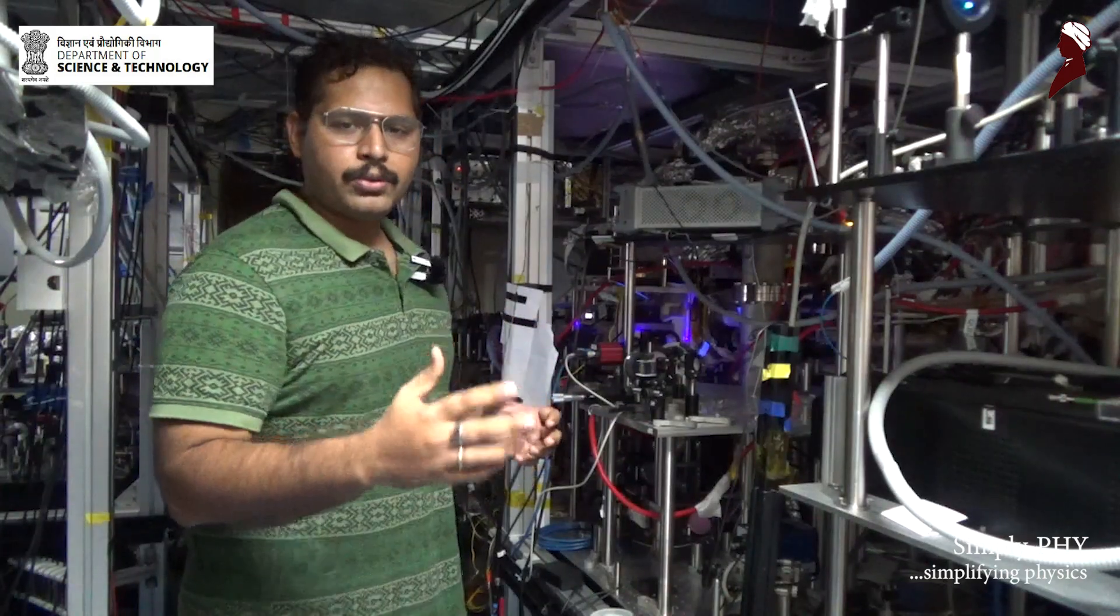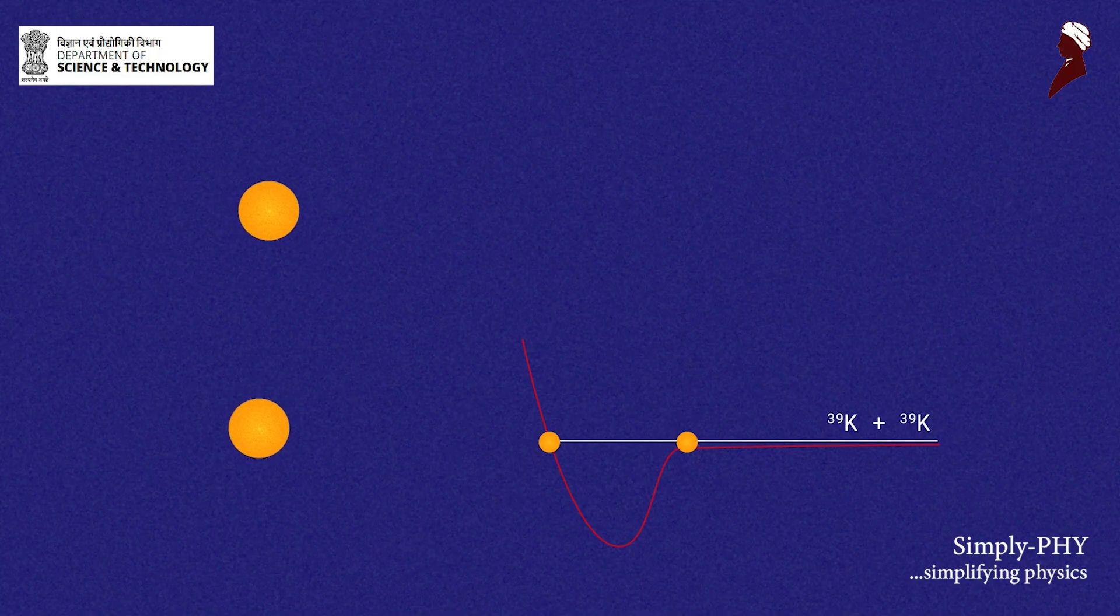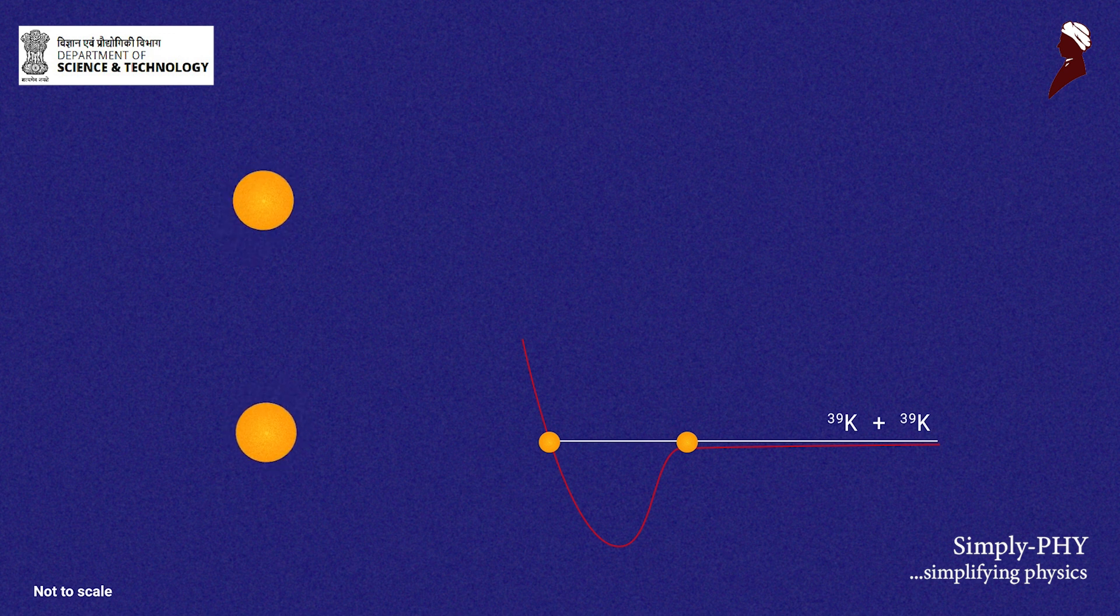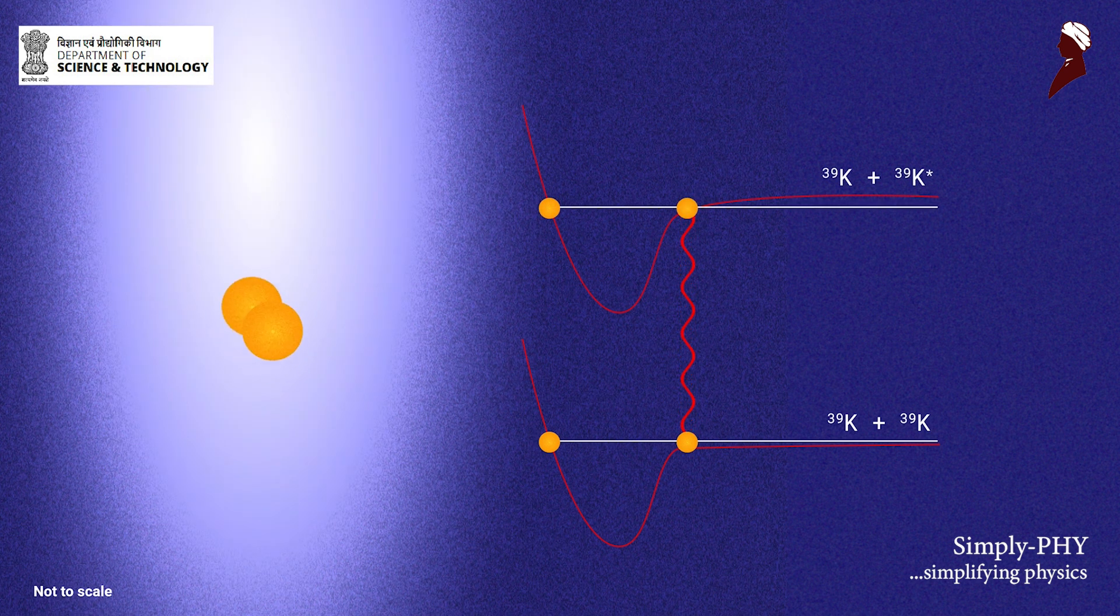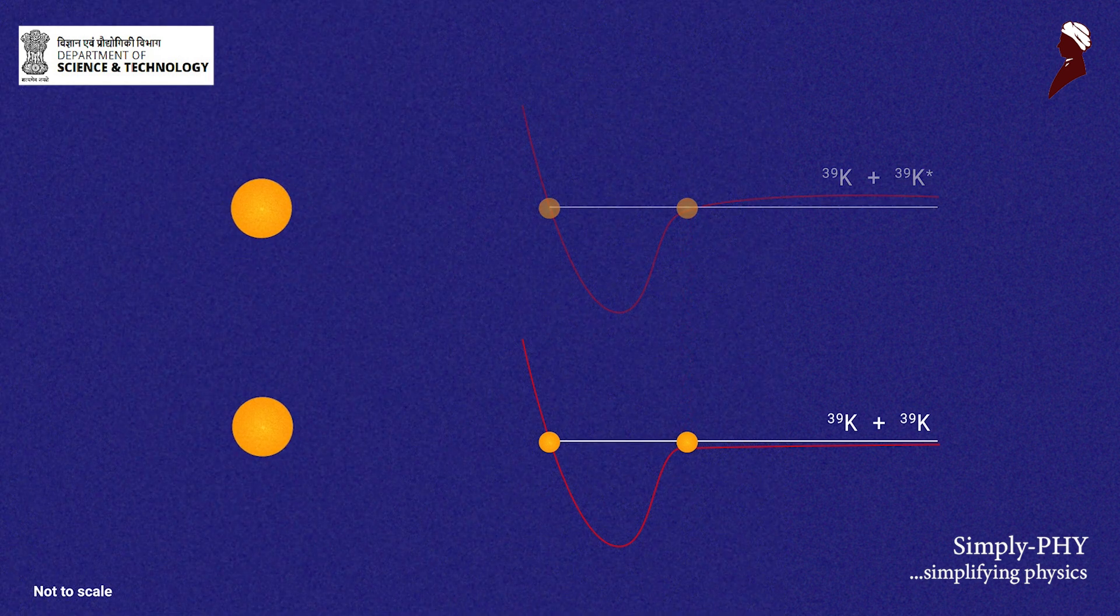This particular beam we call photoassociation beam. Photoassociation is a known phenomenon. What happens is that two atoms are in ground state, one atom gets excited and they form a bound state, a short-lived molecule, and soon after it dissociates.